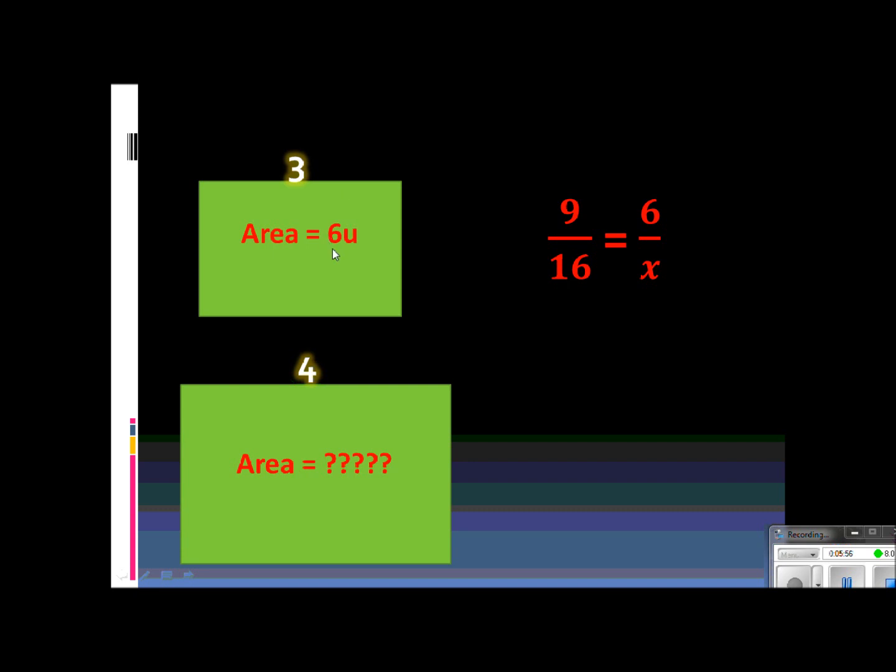So I know that my area for the small one is 6. I don't know the larger one, so I'm going to give that an x. And then I would just cross multiply. 9x equals 6 times 16, which is 96. And then of course I need to get x by itself. So it would be 96 divided by 9, which is actually 10.6 repeating.